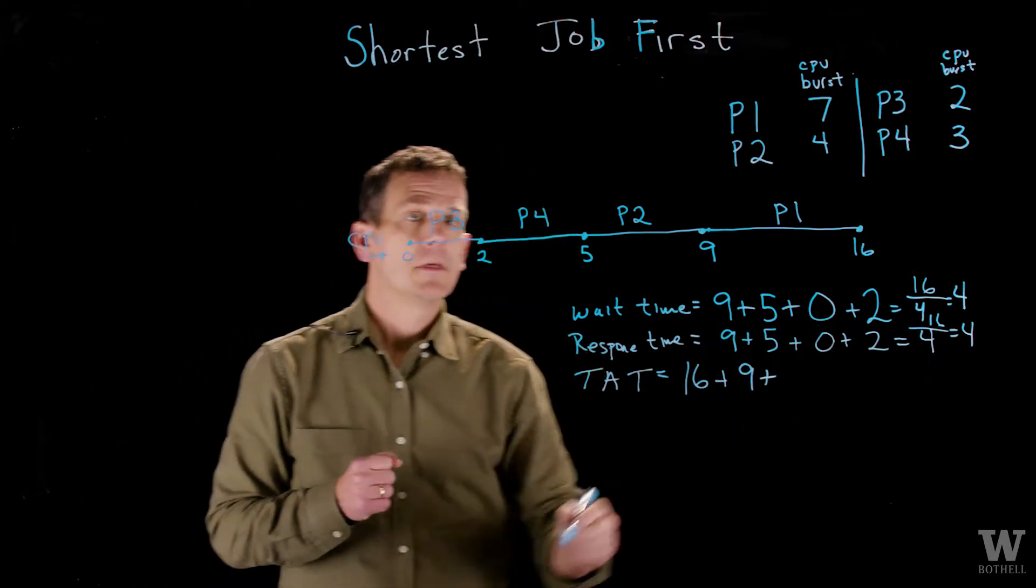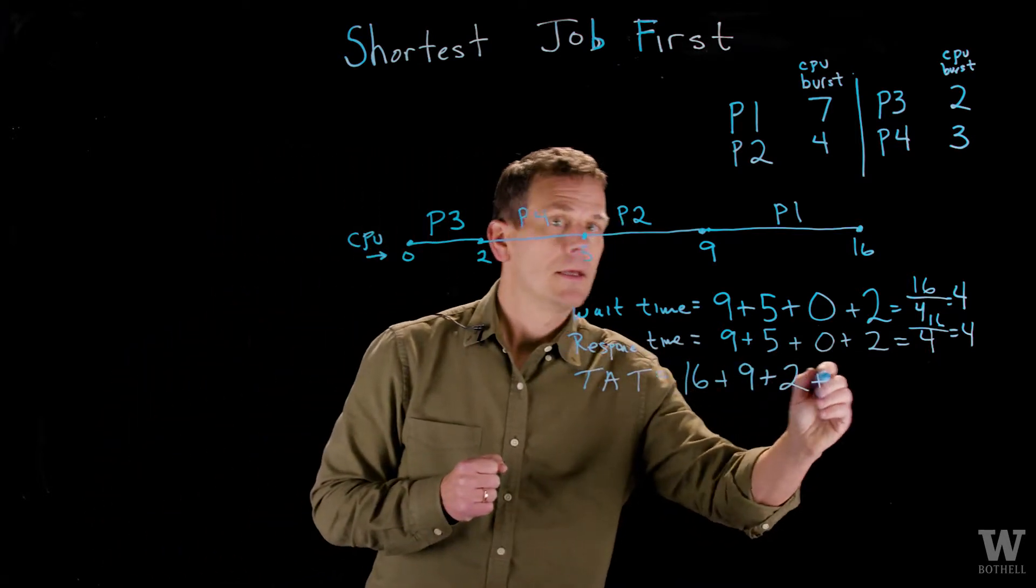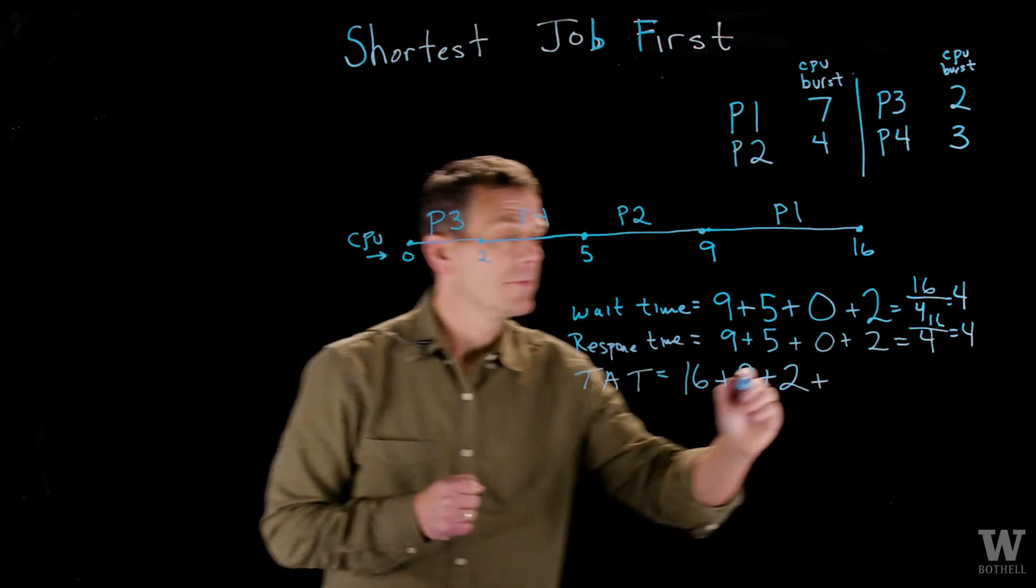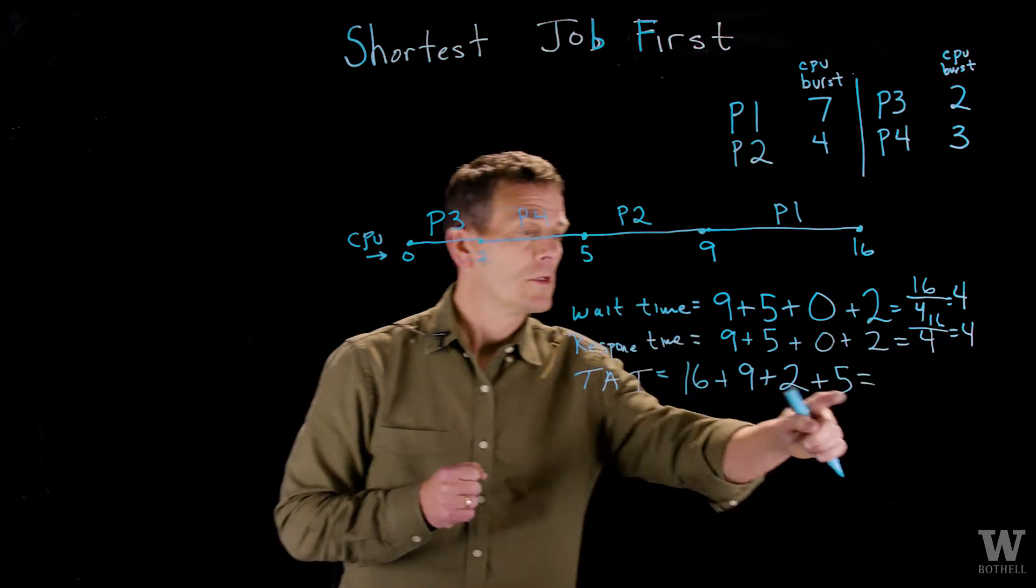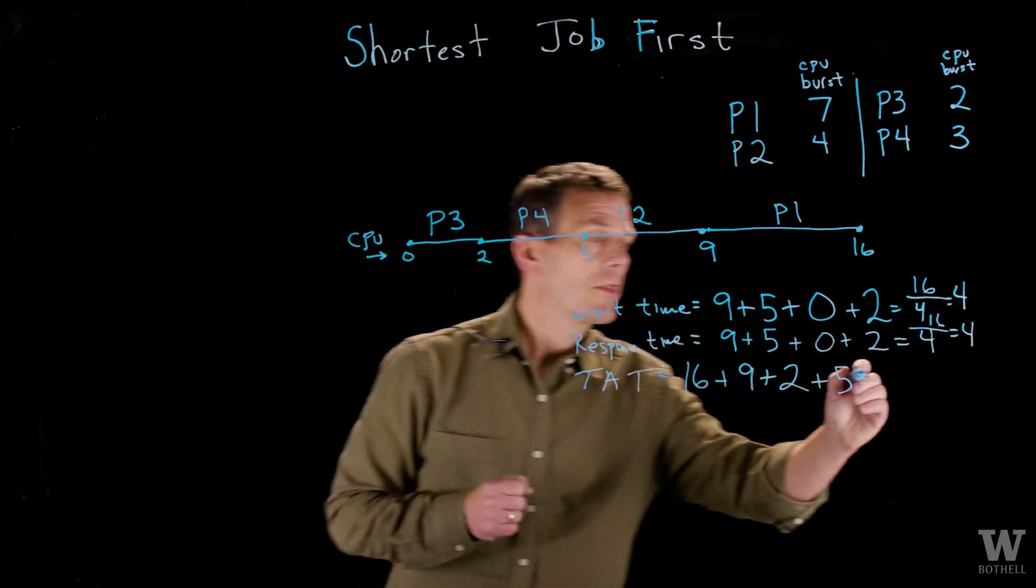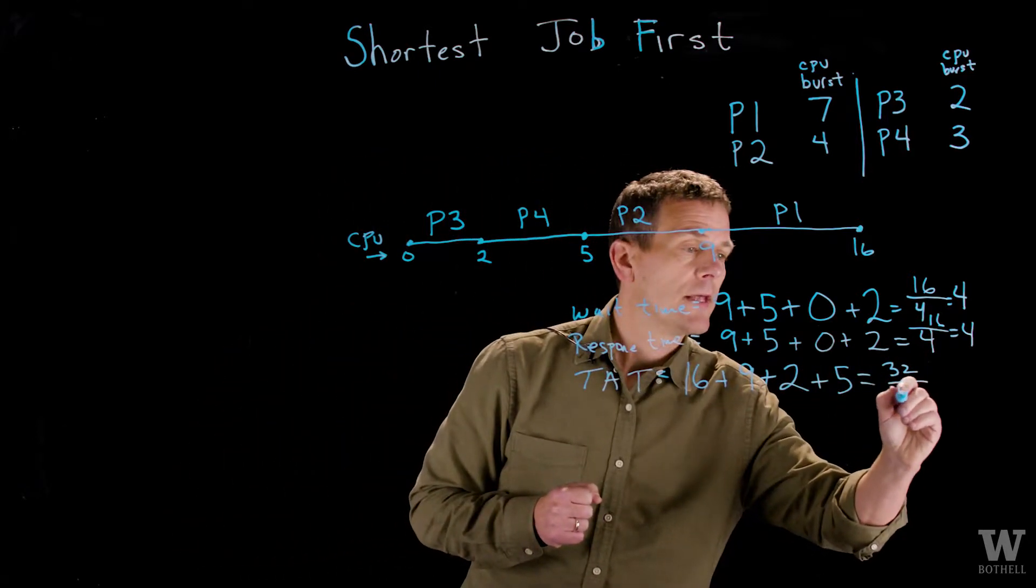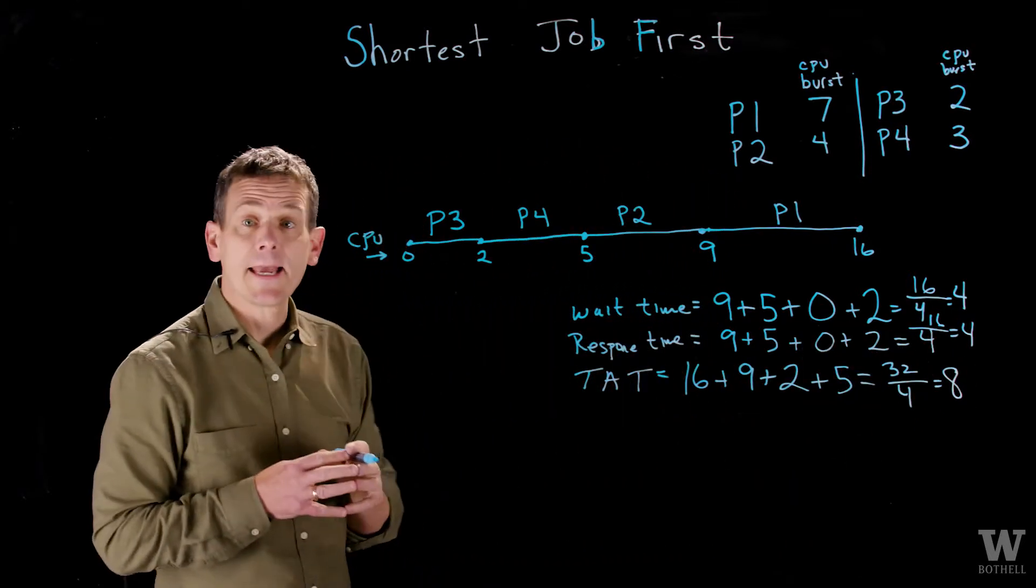P3 was done at 2, and P4 finished up at 5. So if I add this up - 16, 9, 2, and 5 - we get 32. Let's divide that by 4. Average turnaround time is 8.